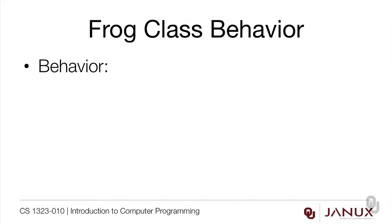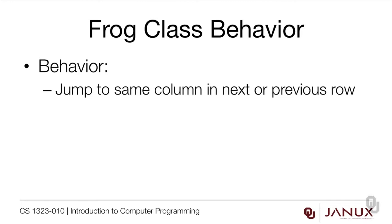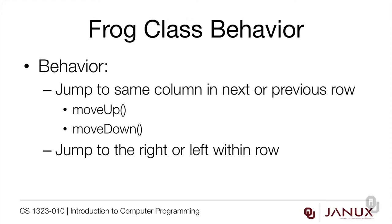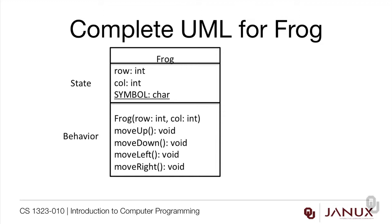Our Frog class behavior is pretty simple. It can jump to the same column in the next or previous row — that would be move up and move down — or it can jump to the right or left within a row, which is move left or move right. Now we can see the complete UML for our Frog class. The data is the row and column, both integers, and the class data is the symbol shared amongst all frogs. We have a constructor that takes a given row and column, and the four methods: move up, move down, move left, and move right. None of those methods have parameters, because they're relative to the current position of the frog.